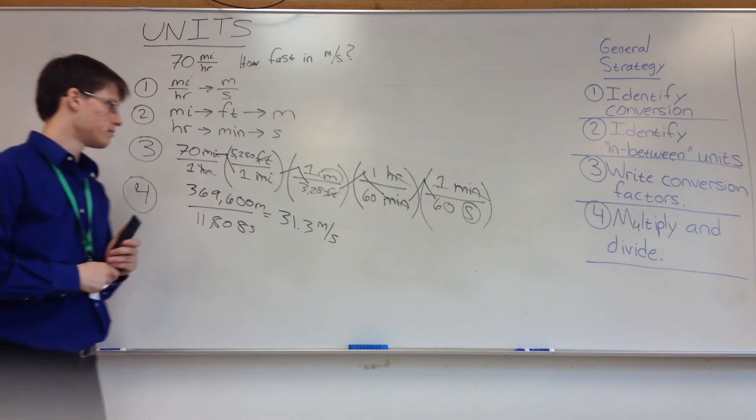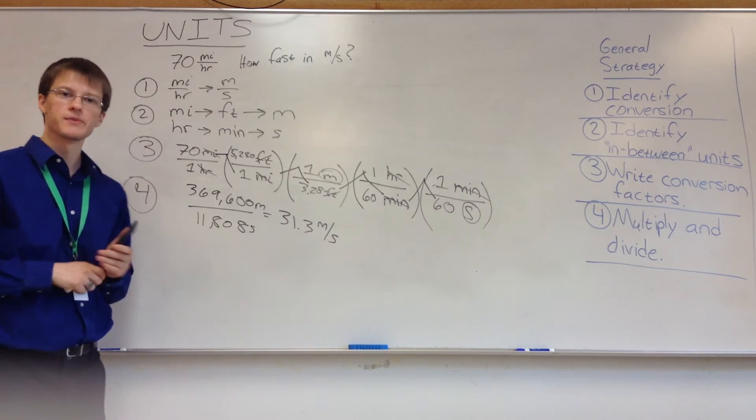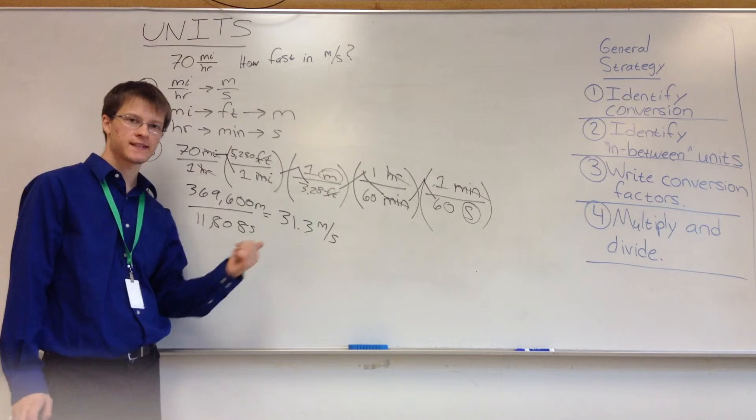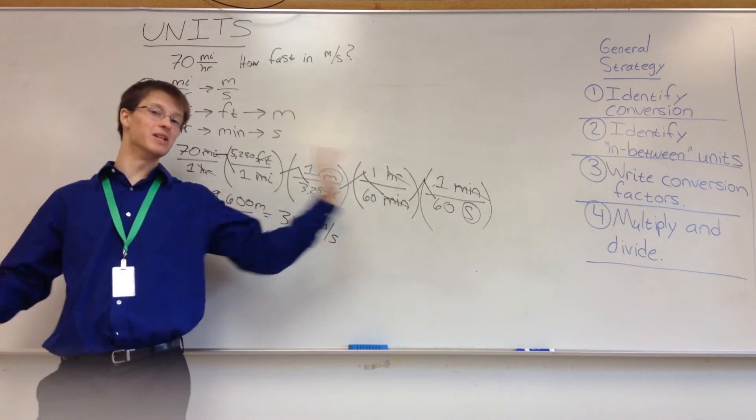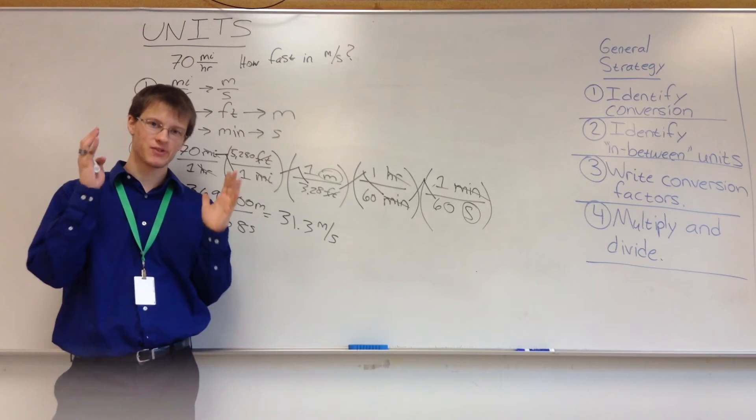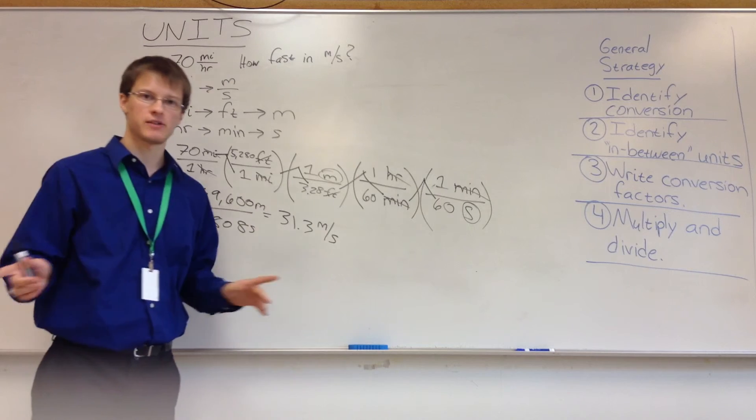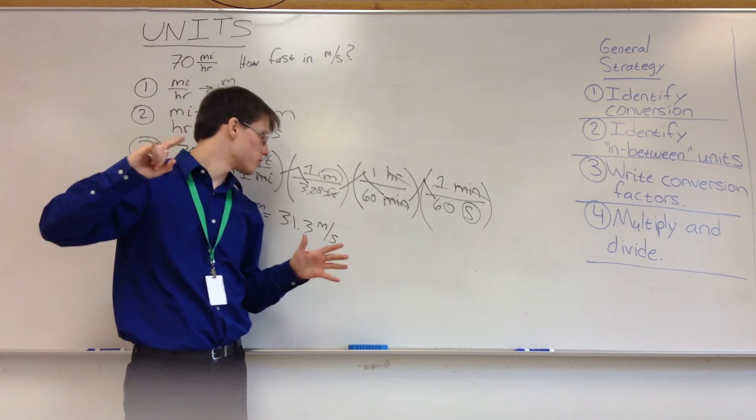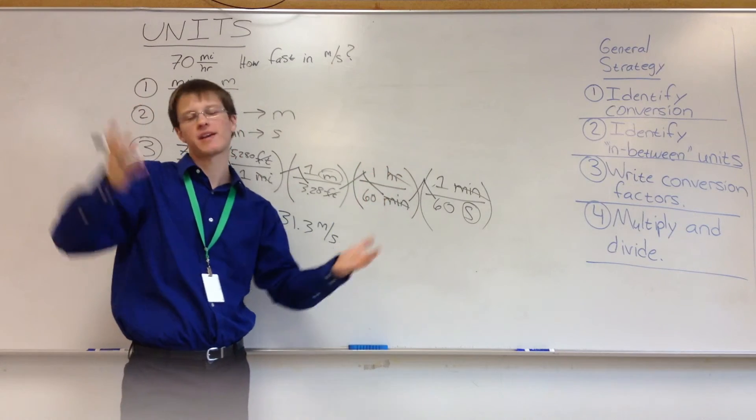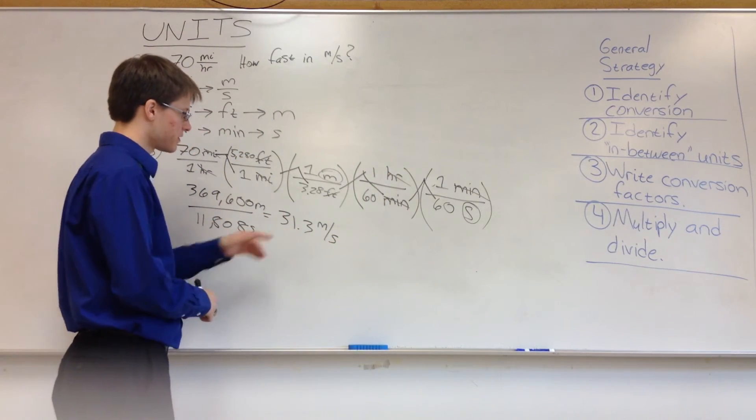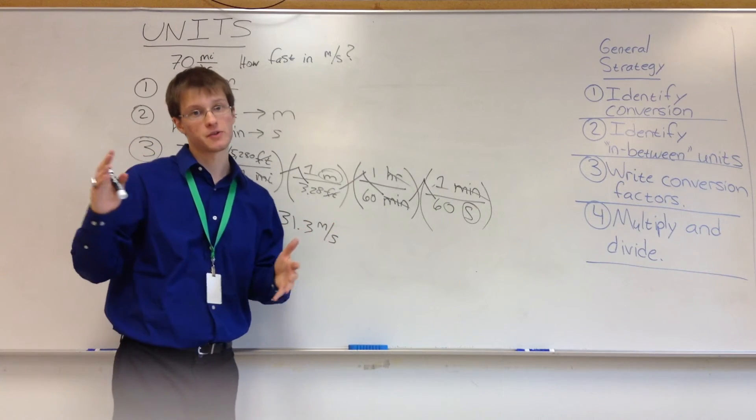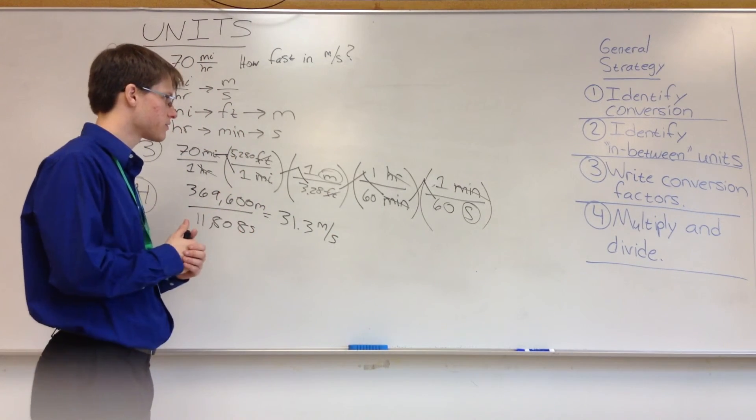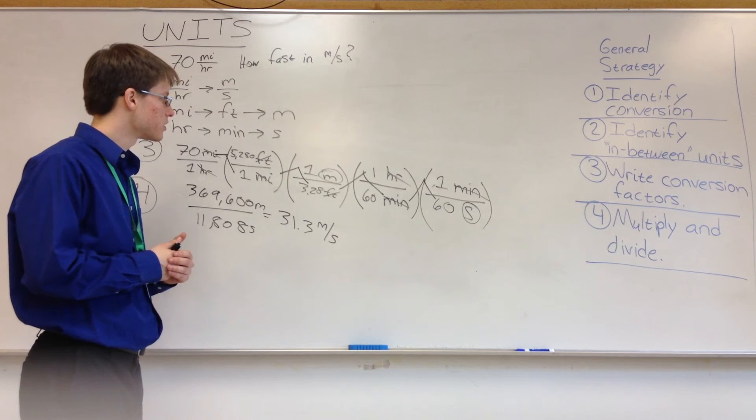So 70 miles per hour is about 31 meters per second, which seems like a reasonable answer. A good test to do when you're doing these problems is if you get an answer that says that you're traveling at 31 million meters per second, think about that. Think about what your answer is saying. See if it makes sense. It would make no sense to travel 31 million meters per second if you're traveling 70 miles in one hour. But you travel 30 million meters every second? There's no way that could happen. Similarly, you know, the same kind of argument holds if you're going at 0.00000031 meters per second. That's way too slow. So just usually check and see if your answer makes sense. That's a good general strategy to do.